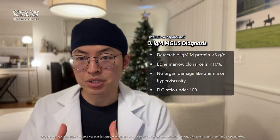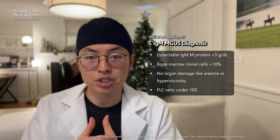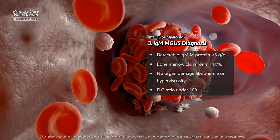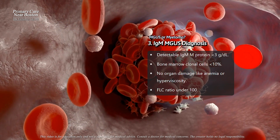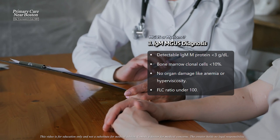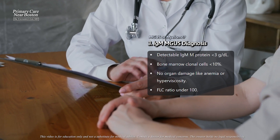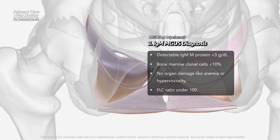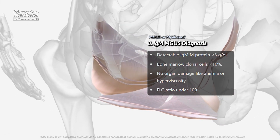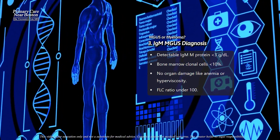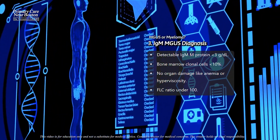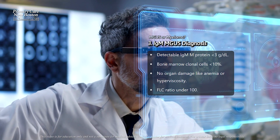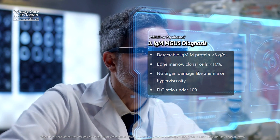For IgM MGUS, a similar approach applies with specific adjustments for the IgM type. First, there must be a detectable IgM protein in the serum, also at a concentration below 3 grams per deciliter (30 grams per liter), identified by electrophoresis and confirmed by immunofixation. Next, the bone marrow should contain fewer than 10% clonal lymphoplasmacytic cells or plasma cells. Lastly, there should be no evidence of organ damage, such as anemia, symptoms of hyperviscosity (thickened blood), or enlarged lymph nodes, liver, or spleen.